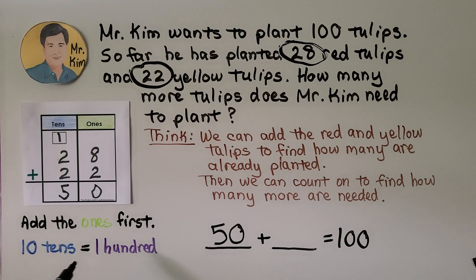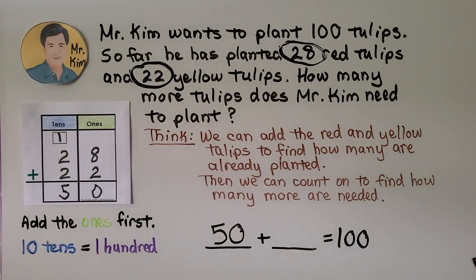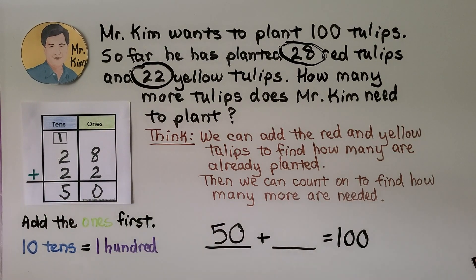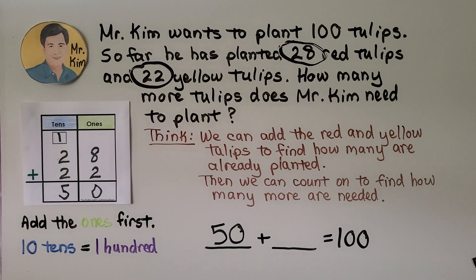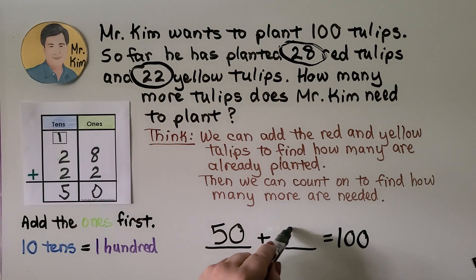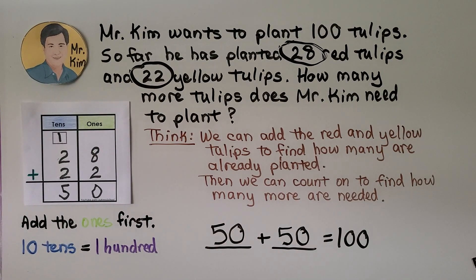Ten tens is equal to 100, which is how many he wants to plant. We have five tens — 50. How many more tens would he need to have 100? If you said five tens, you're right. Five tens is equal to 50. He needs to plant 50 more tulips to have 100 planted.